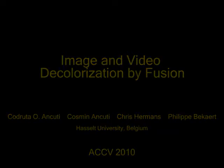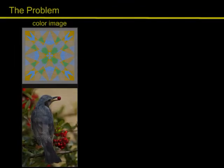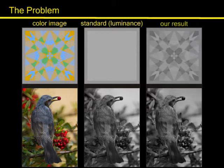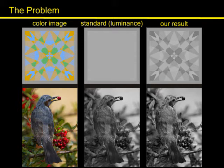Effective image decolorization is required in several applications. The widely used standard color-to-gray conversion only uses the luminance channel to decolorize an image. When isoluminant regions are mapped onto the same gray level, the global appearance is changed and fine detail is lost.